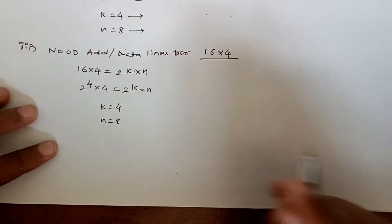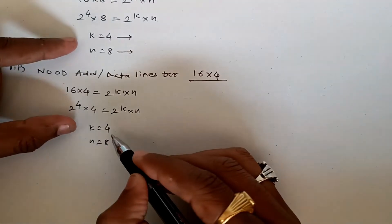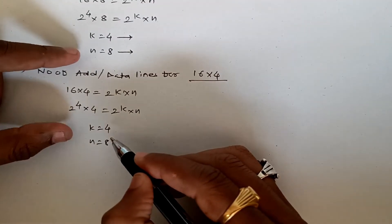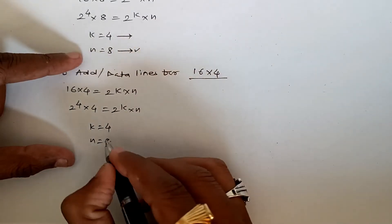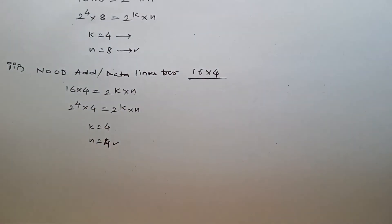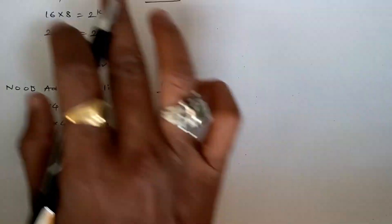So for these two ICs, we need 4 address lines and 4 data lines. But for 16 by 8 we need 8 data lines, whereas for 16 by 4 we need only 4 data lines. Based on this requirement, now we'll design the 16 by 8 IC using 16 by 4.